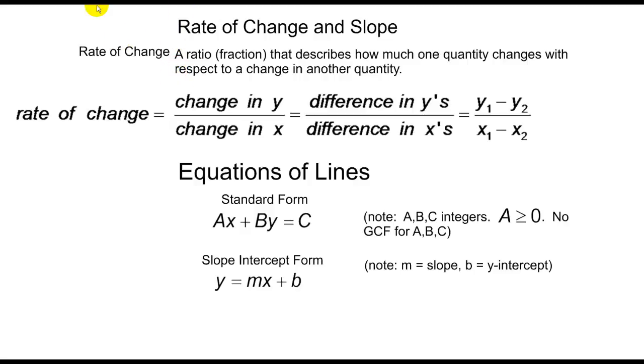We're used to seeing slope written as change in y over the change in x, or the difference in y over the difference in x, or if I have points y1 minus y2 over x1 minus x2. You could do it the other way, y2 minus y1 over x2 minus x1, doesn't matter.